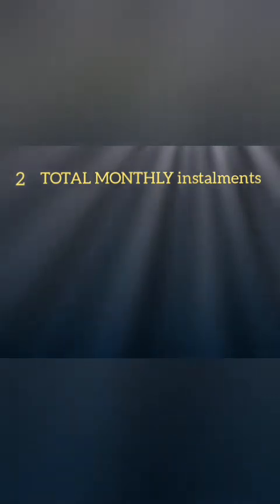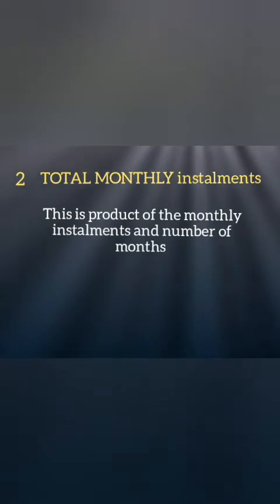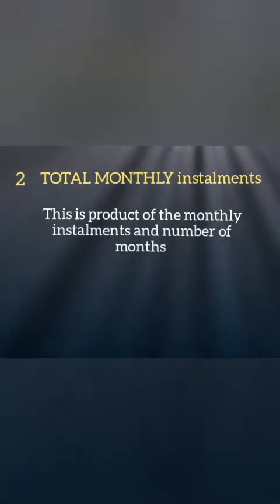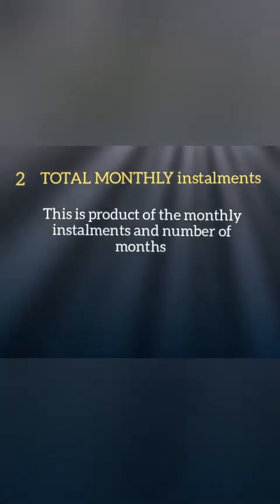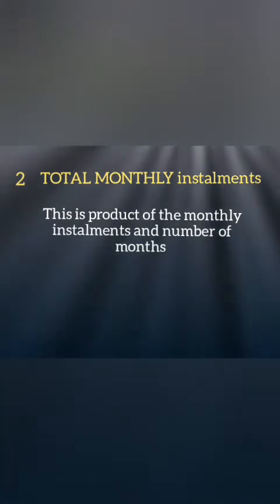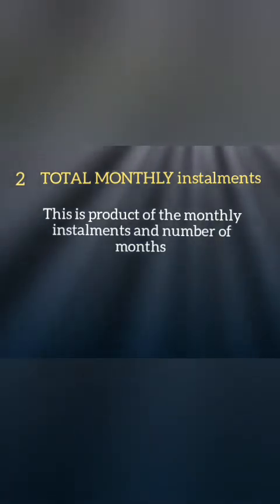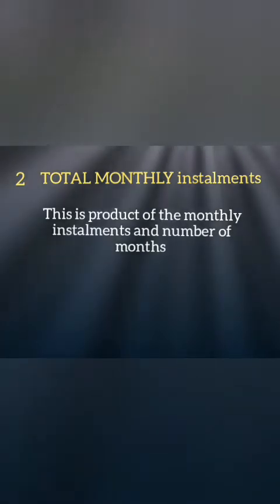Number two is total monthly installments. Total monthly installments is the product of the monthly installments and the number of months. Then number three is the third important point we need to know.